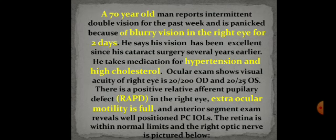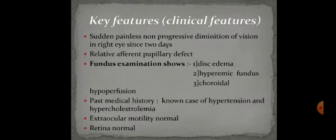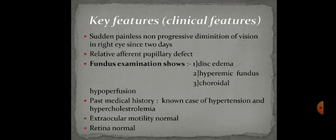The highlighted key features are: 70-year-old male with blurry vision in the right eye for two days; known case of hypertension and high cholesterol; positive RAPD; extraocular motility is full. Key findings are sudden, non-progressive diminution of vision in the right eye, relative afferent pupillary defect, disc edema, hyperemic fundus, and choroidal hyperperfusion. Vision loss is sudden — present for two days — with no history of pain, therefore it is painless.